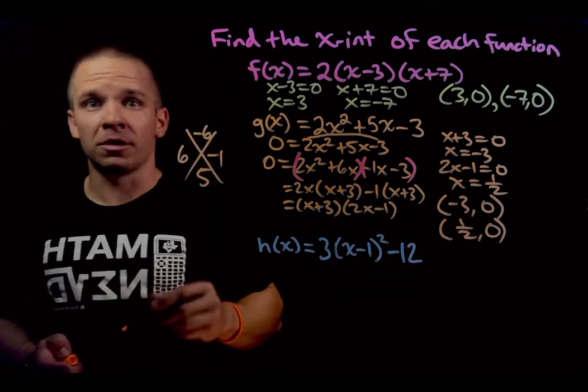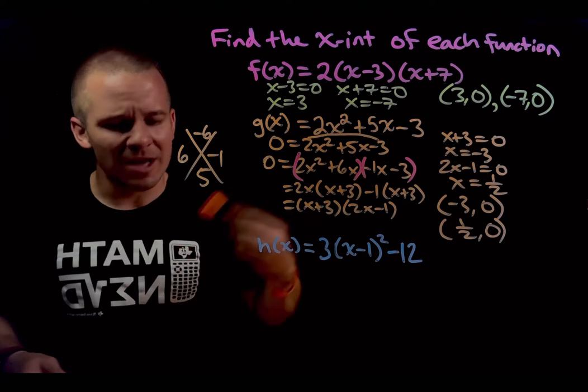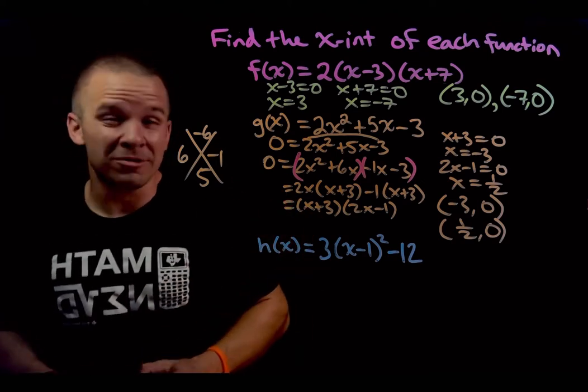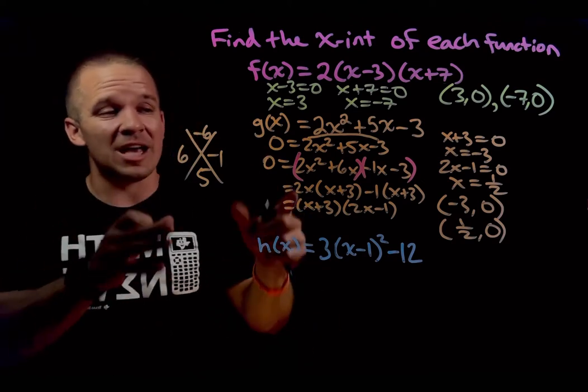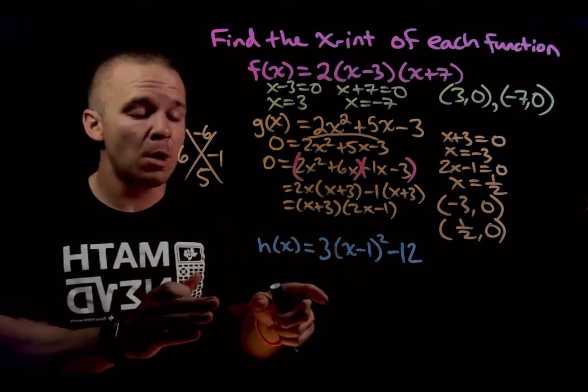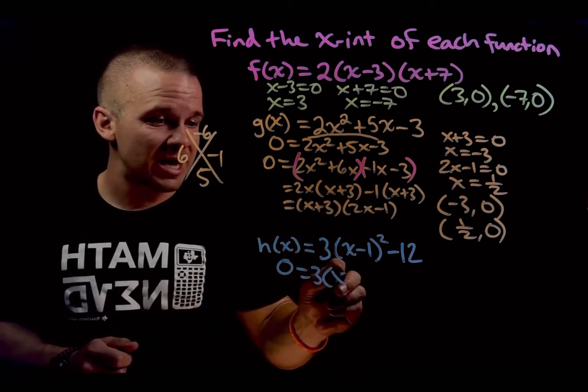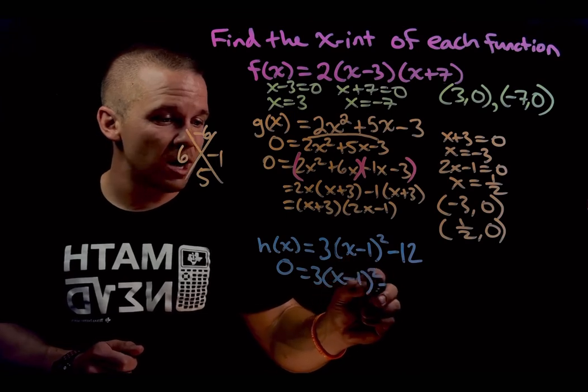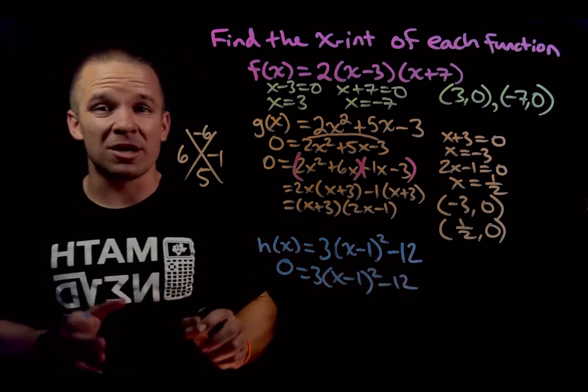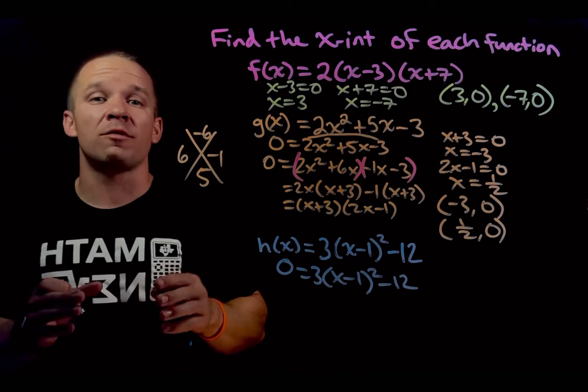Boom. Two thirds of the way done. Love me some fractions. All right, onto the blue one here. This is vertex form. It starts out the same as the standard, aka general form, with setting it equal to zero. So I'm going to have zero equals three parentheses x minus one squared minus 12. But now I got to solve a little differently. I'm going to use a strategy of solving with square roots.